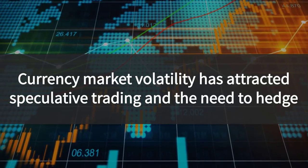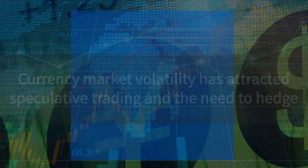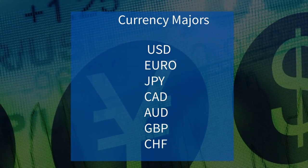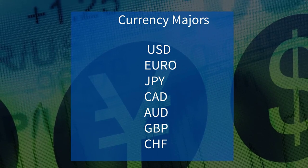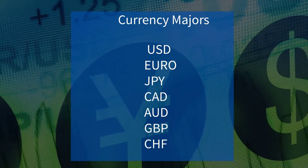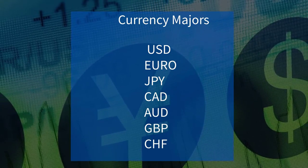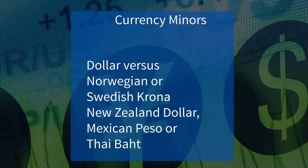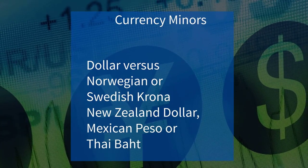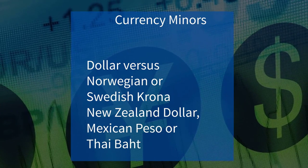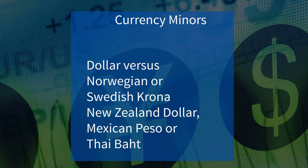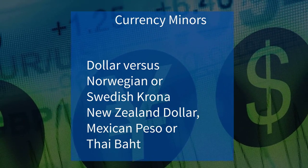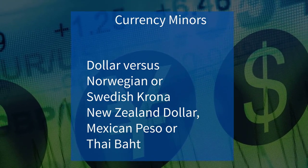Foreign exchange dealings involving the US dollar, euro, Japanese yen, Canadian and Australian dollars, British pounds and the Swiss franc are referred to as currency majors. Minor pairs might be considered the dollar versus any of the Norwegian or Swedish krona, New Zealand dollar, Mexican peso or Thai baht. And while the dollar is usually on one side of a currency transaction, that's not always the case.